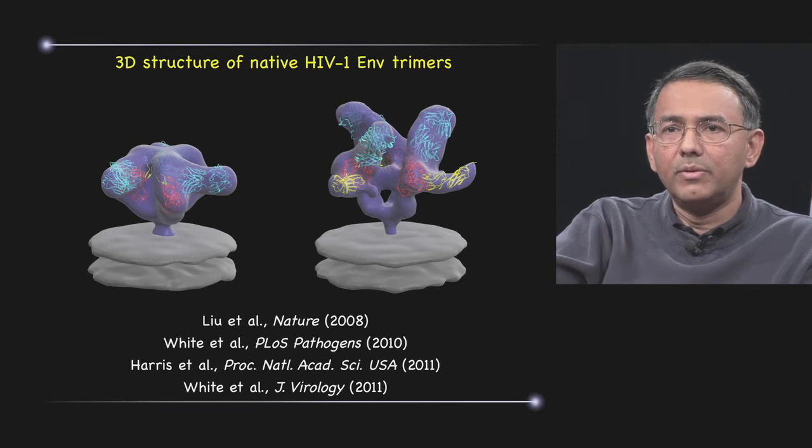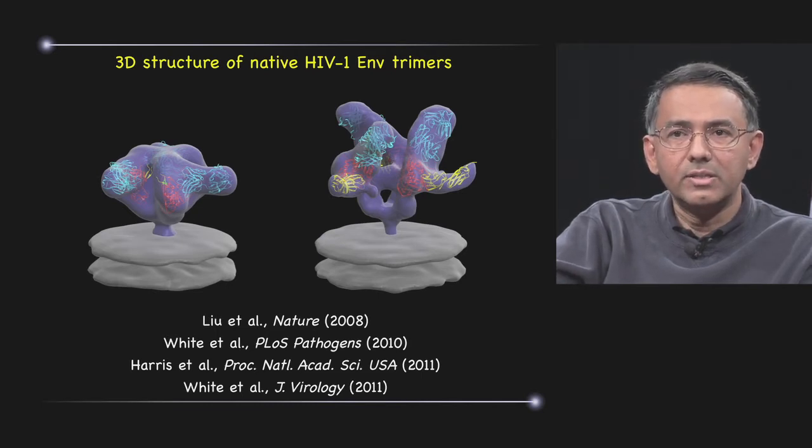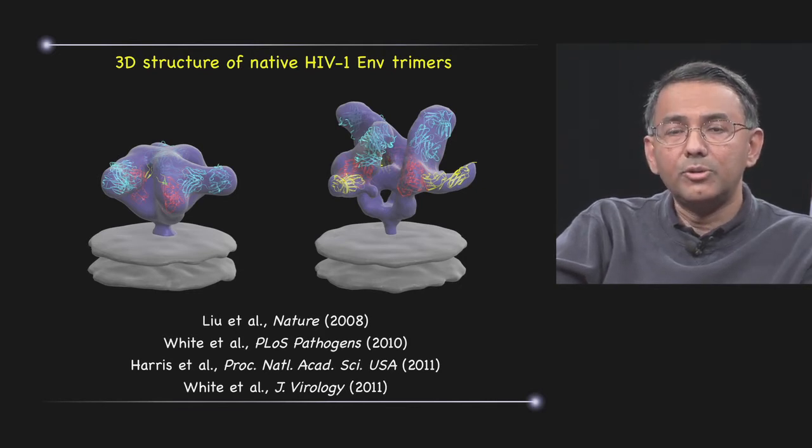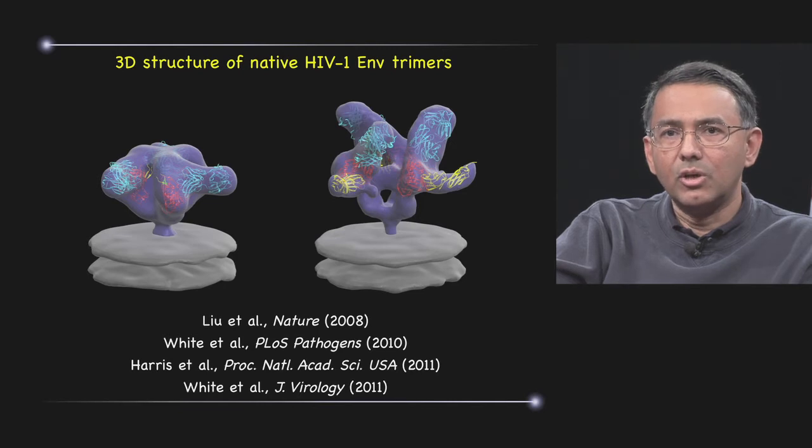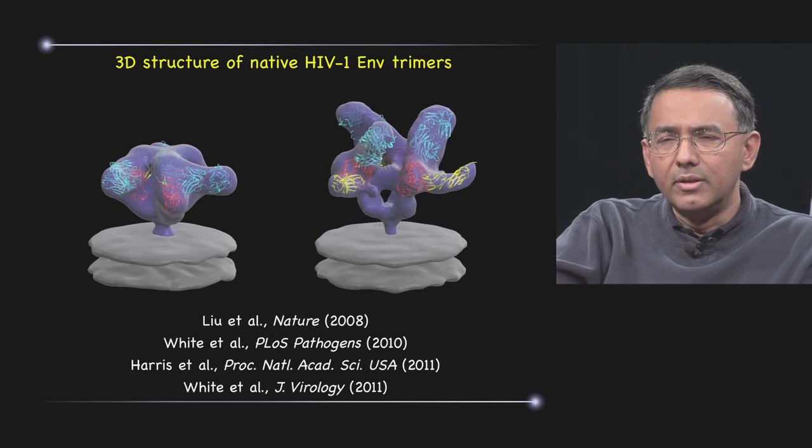I show a couple of examples where we've combined the density map derived by cryo-electron tomography with structures of GP120 in complex with antibodies and other ligands, derived by X-ray crystallography. And this type of approach gives us a unique opportunity to determine the structures of membrane proteins when they're still present on the surface of an infectious virus. And it is important to understand the design principles that might take us towards a vaccine.